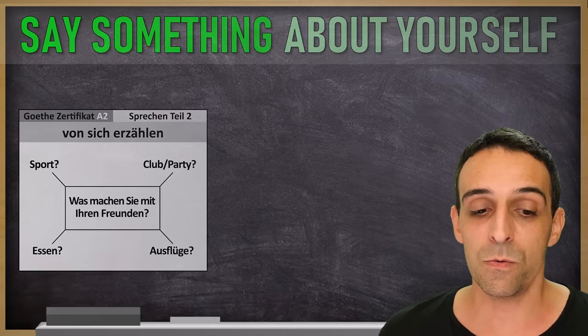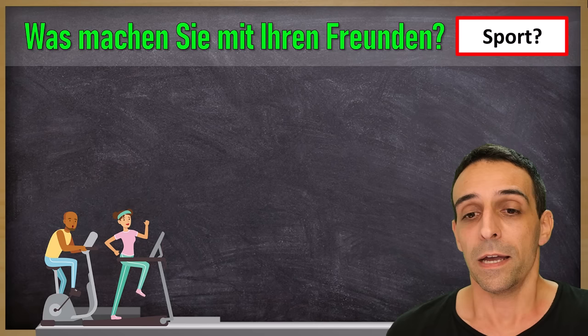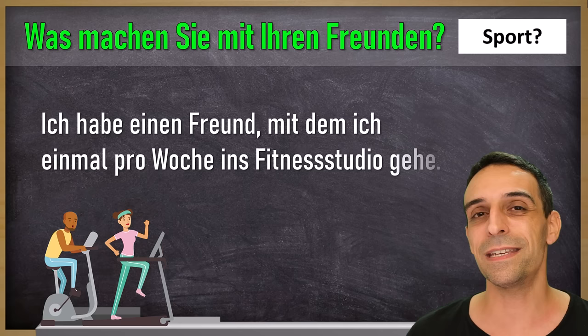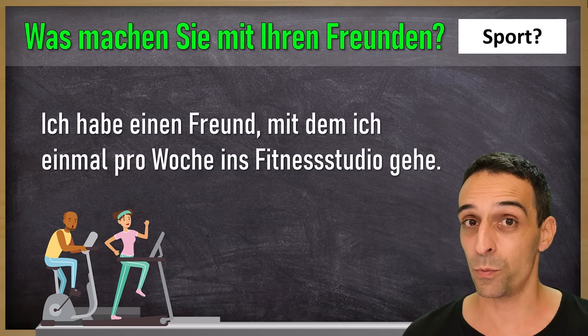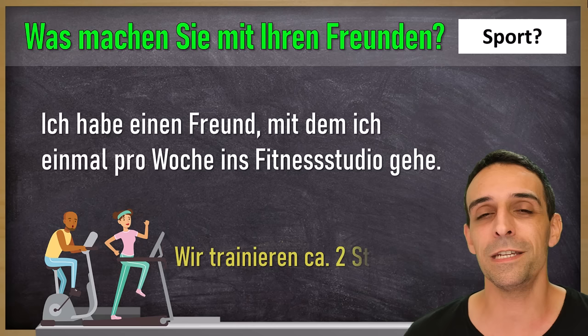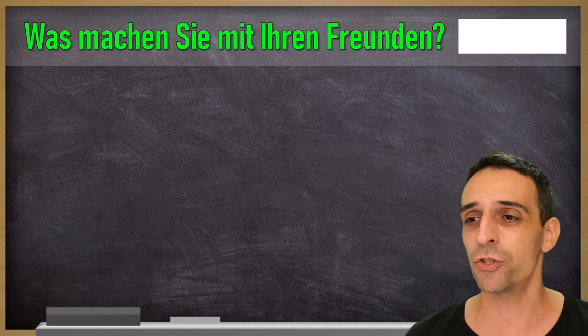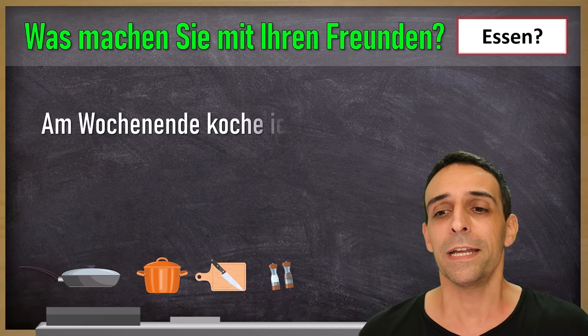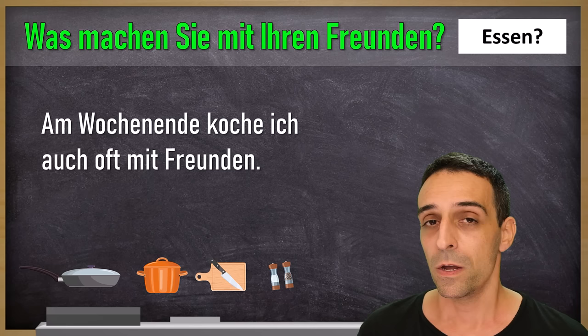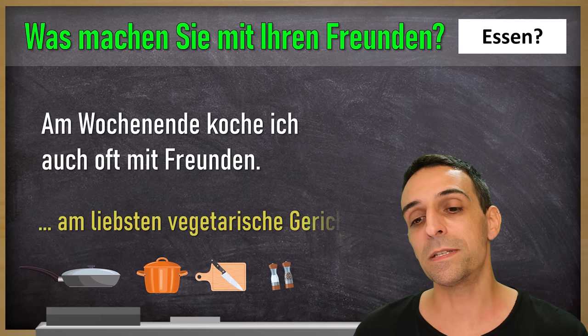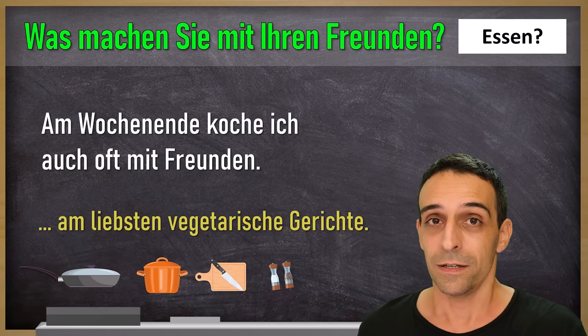I would start with Sport. For example: Ich habe einen Freund, mit dem ich einmal pro Woche ins Fitnessstudio gehe. For more points, add a second sentence: Wir trainieren circa zwei Stunden. Next I would choose Essen, which is also easy: Am Wochenende koche ich auch oft mit Freunden. Add something: Am liebsten vegetarische Gerichte.